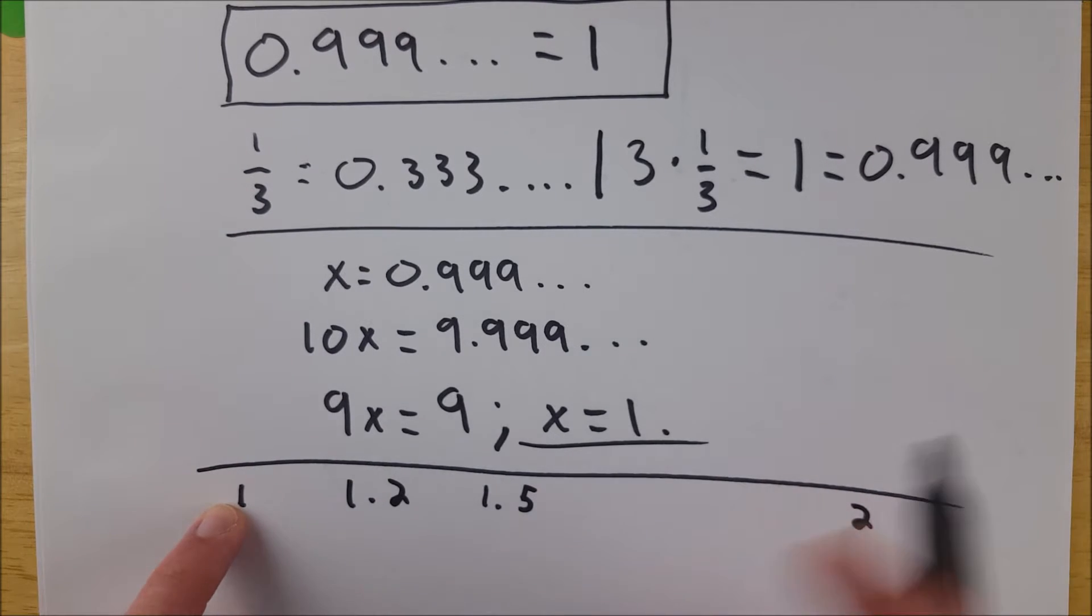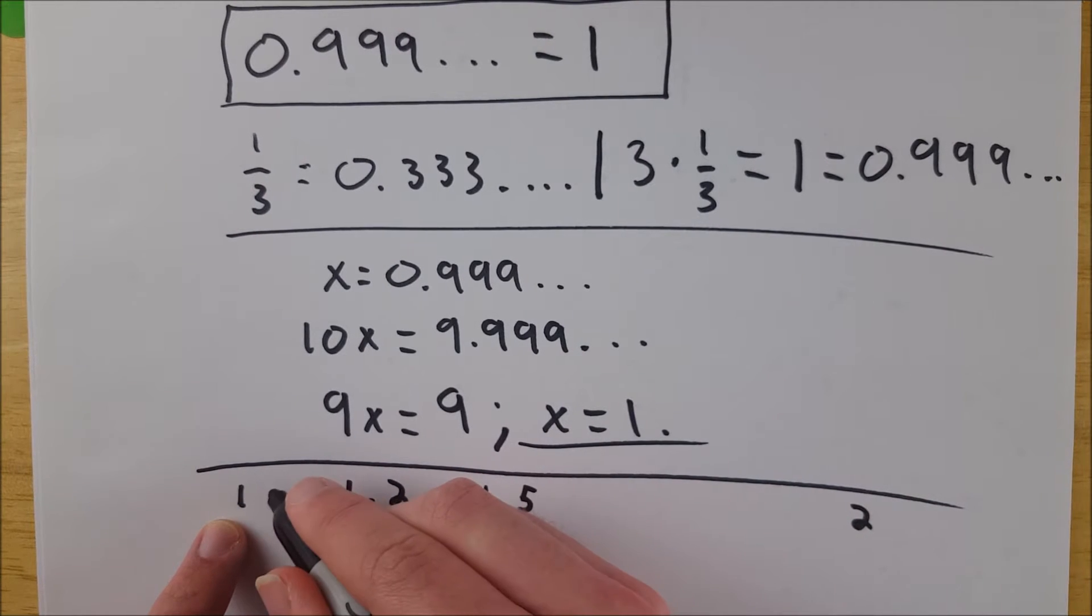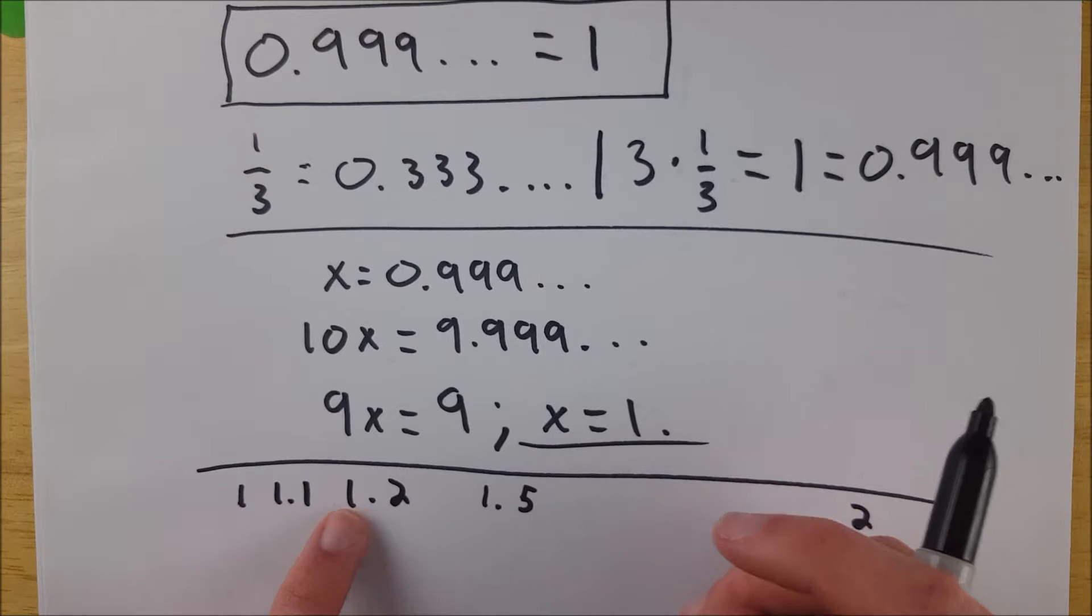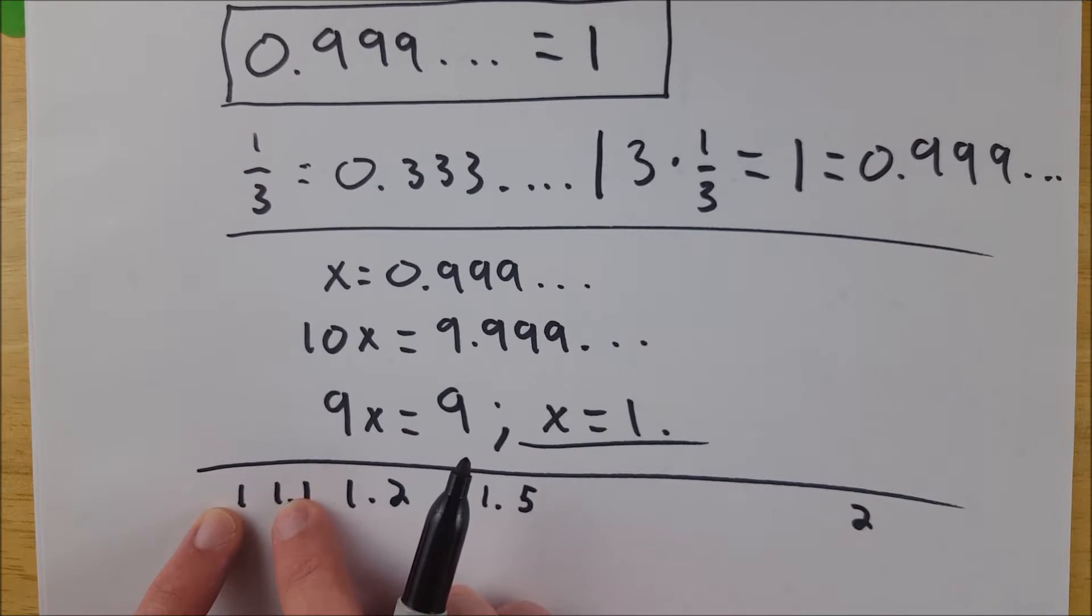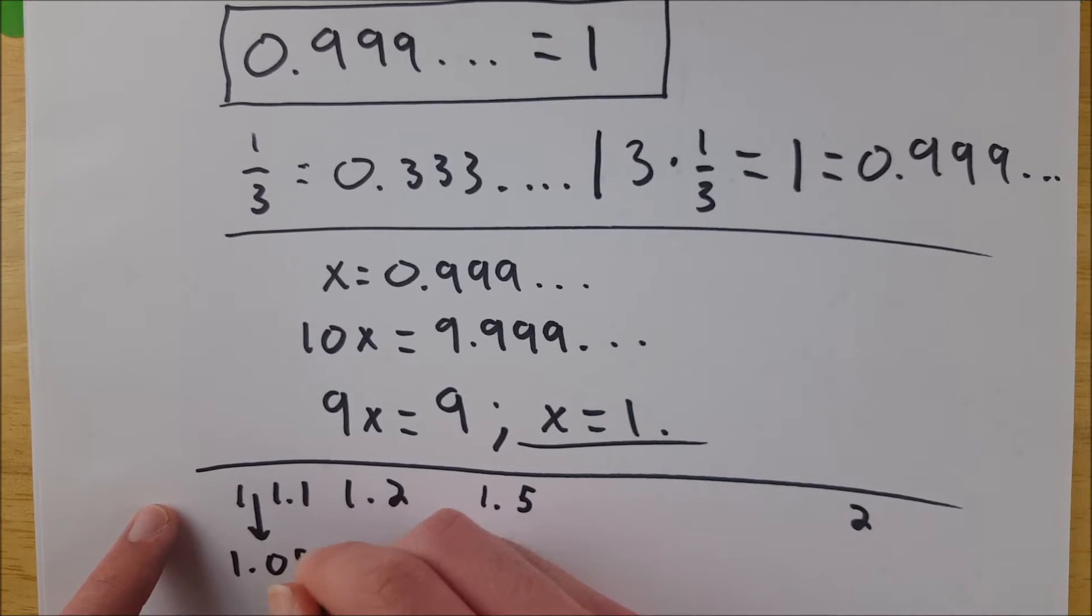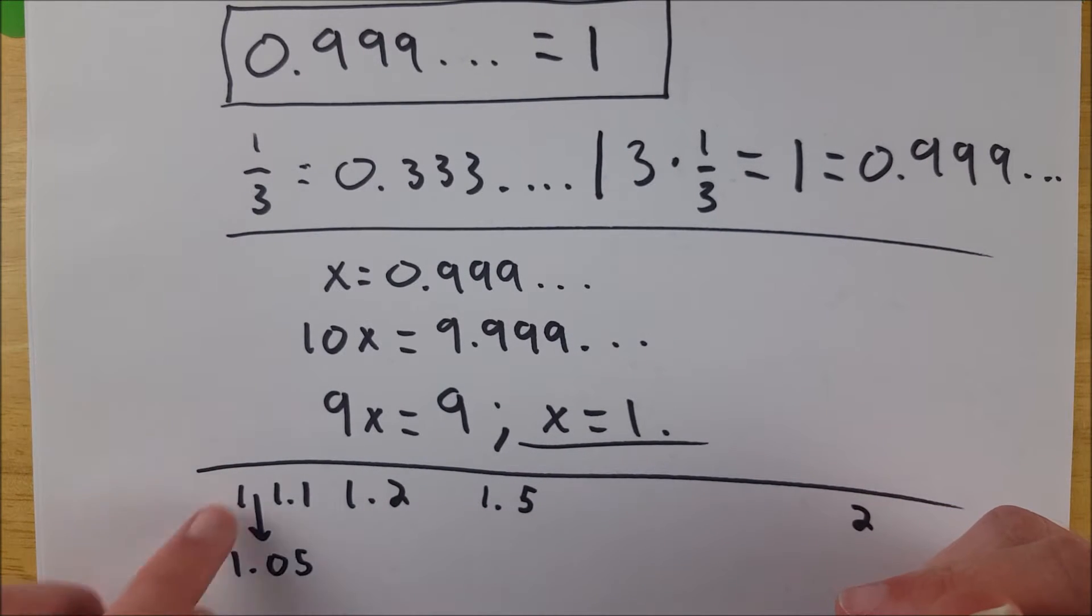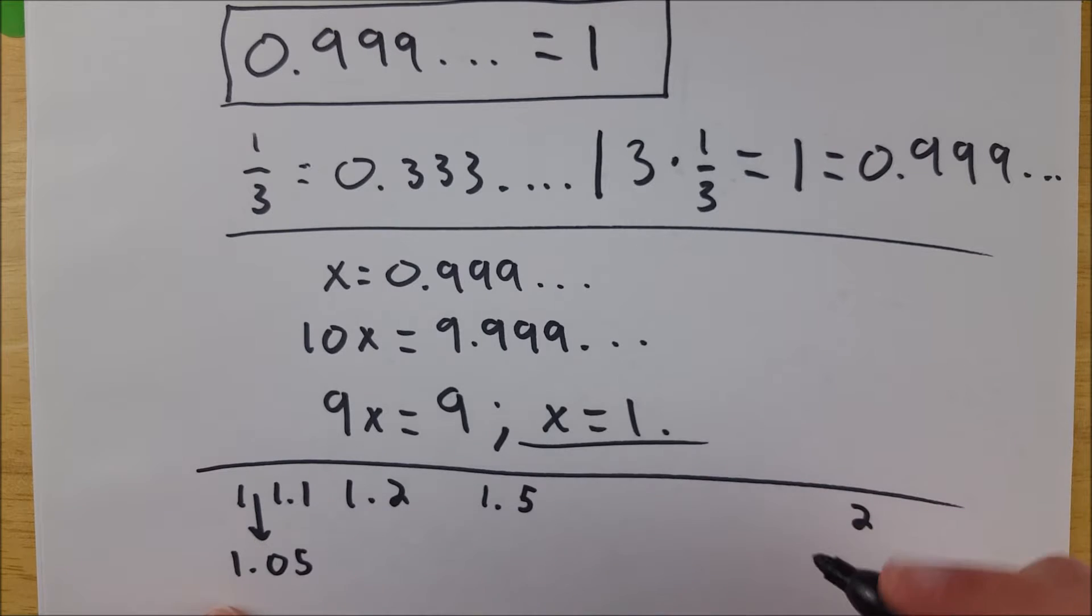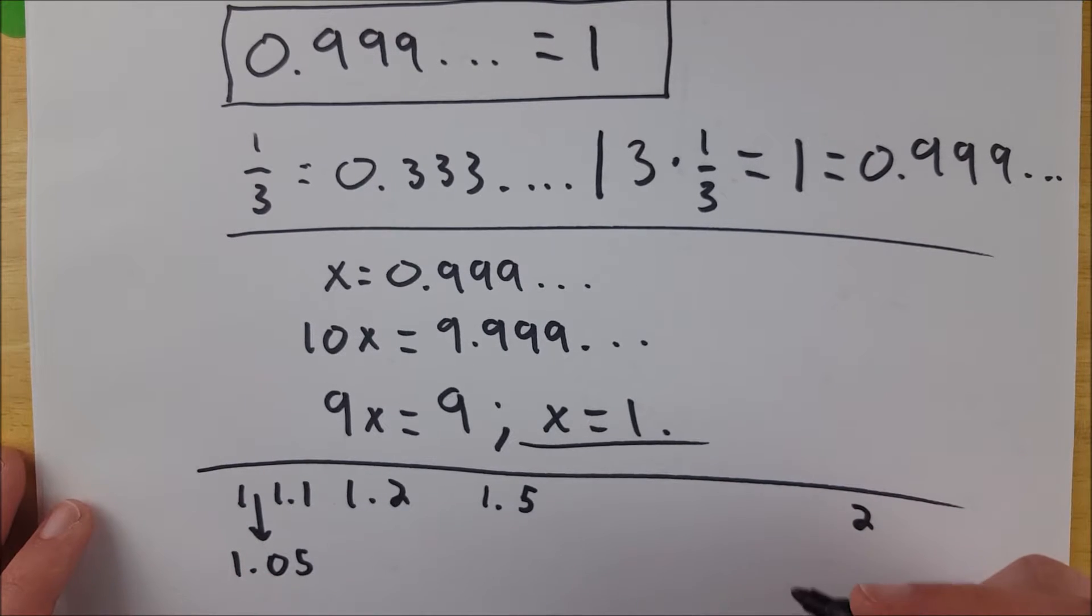What about 1 and 1.2? You could just pick 1.1. That's between those two numbers. What about 1 and 1.1? You could just pick out 1.05. That's between those two numbers. So you can see all of these numbers are different because you can find a number that is between them.